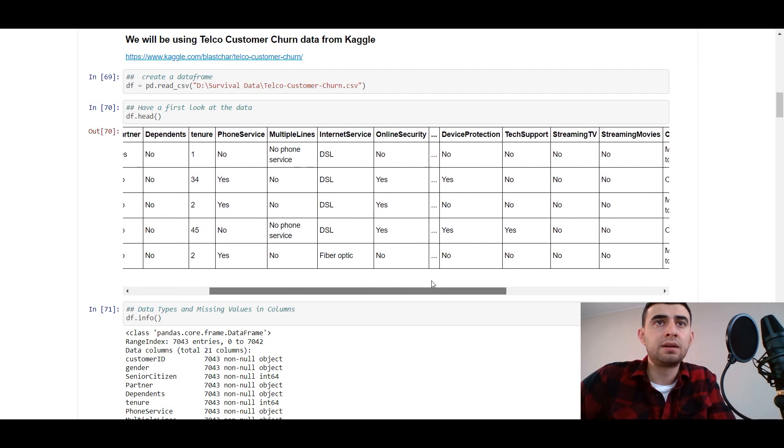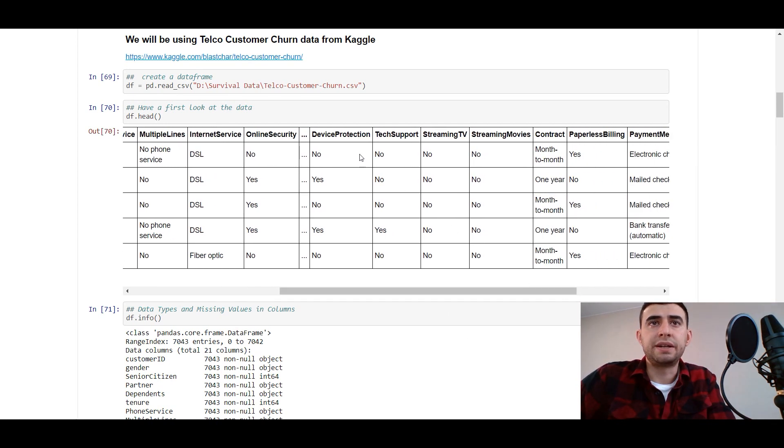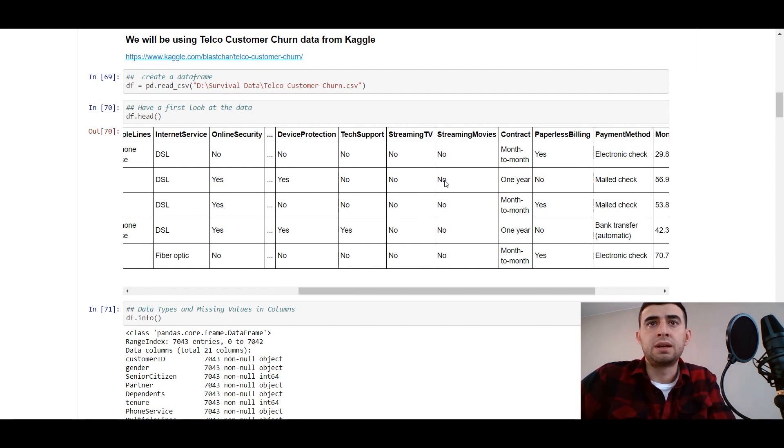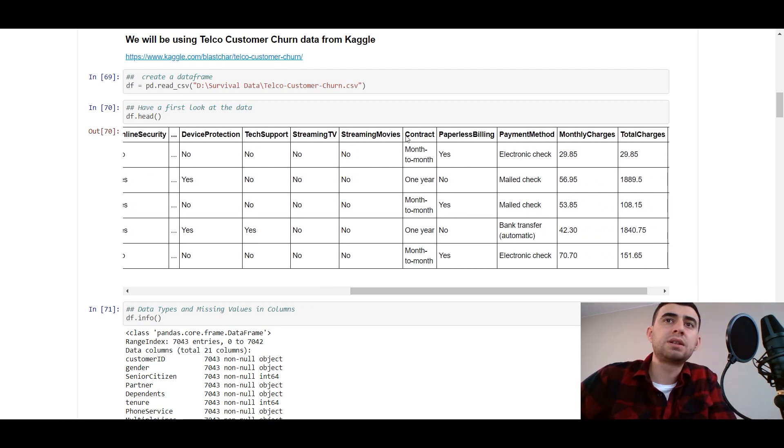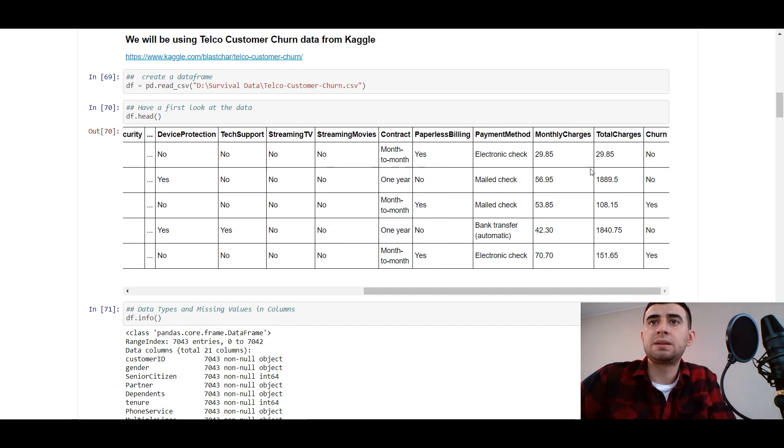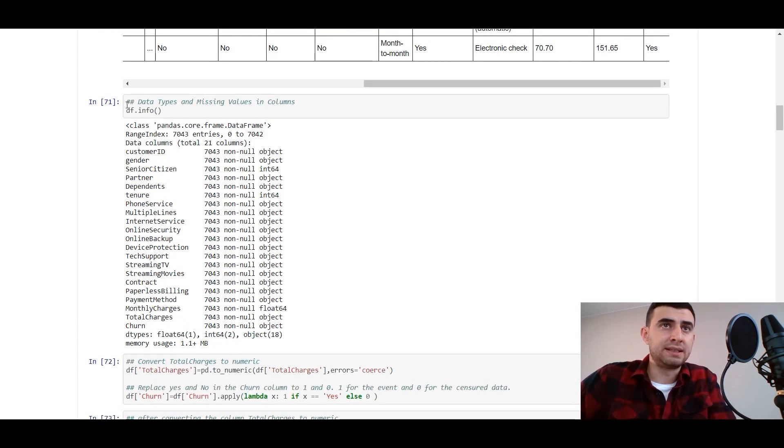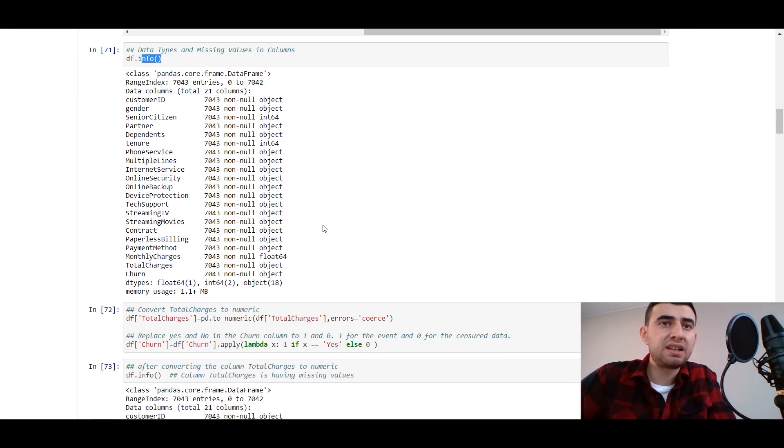Let's have a first look at data with df.head. We've got customer ID, gender, senior citizen - remember it's telecom company data - partner, dependents, tenure, phone service, multiple lines, internet service, online security, and many others: device protection, tech support, streaming TV, streaming movies, contract, paperless billing, payment method, monthly charges, total charges, and churn. Churn is a label for us.